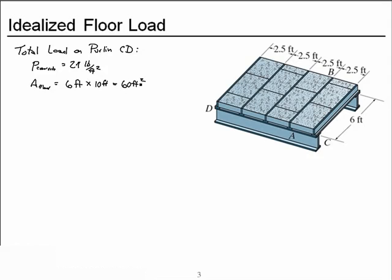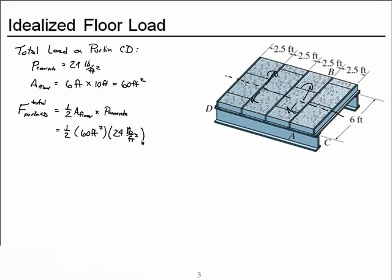Where does all that load go? If we assume that the load travels to the nearest supporting purlin, then half of the total weight of the concrete panels goes to purlin CD. So the total force on purlin CD is going to be one-half of the floor area times the distributed pressure on that floor, and that gives us 720 pounds total load on CD.